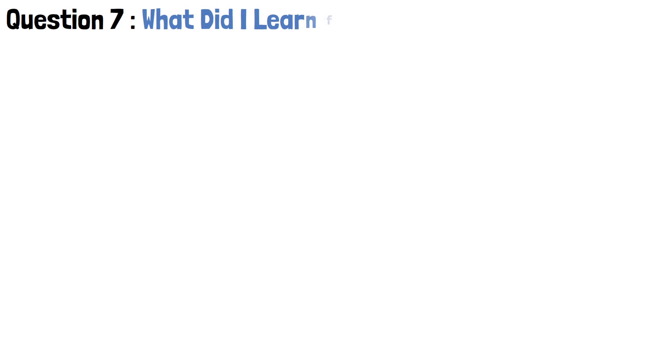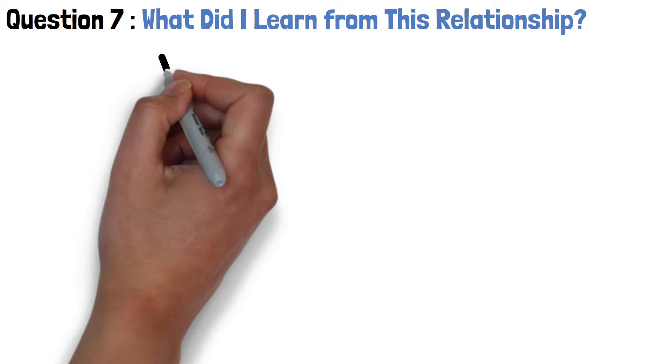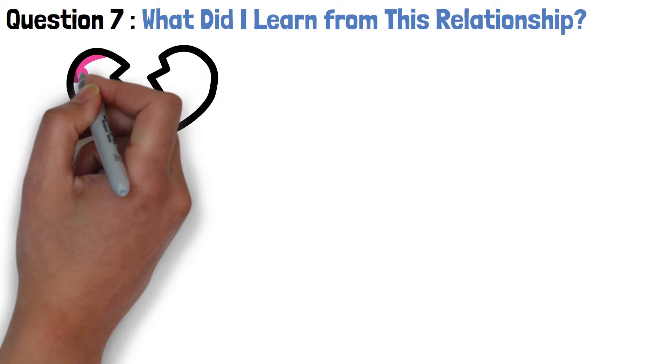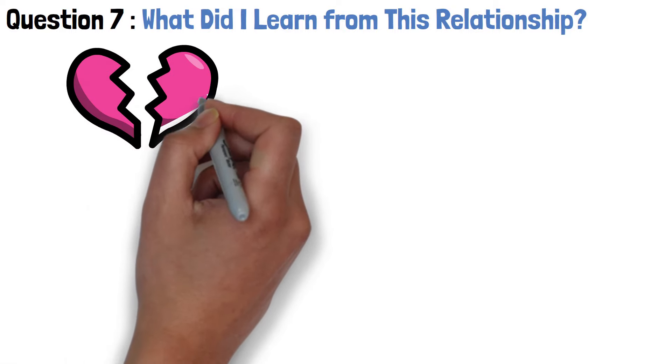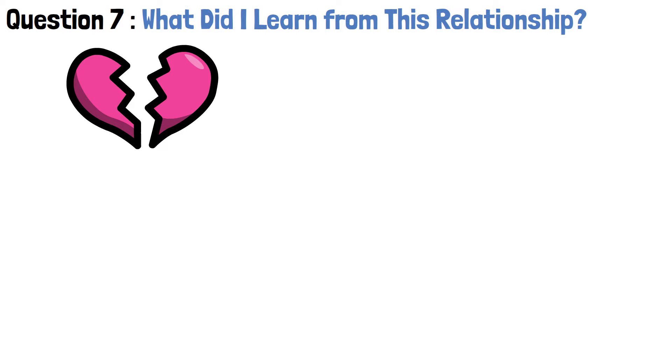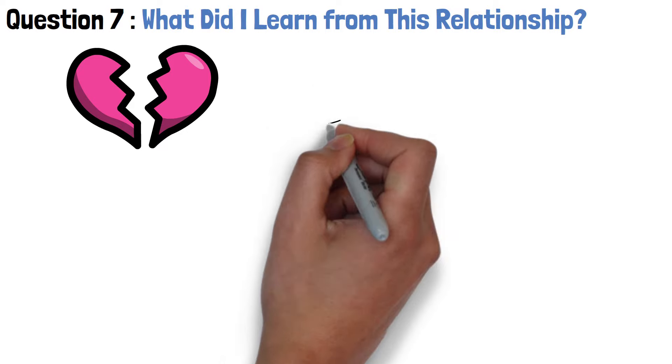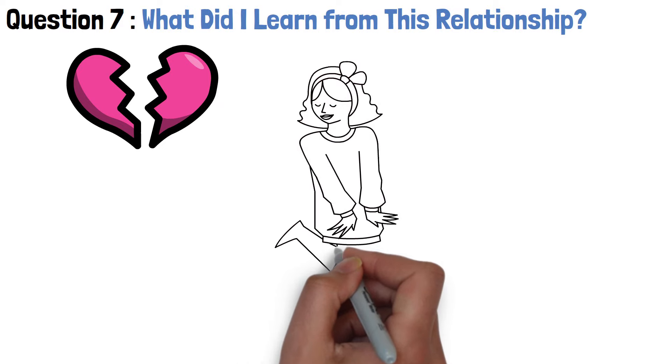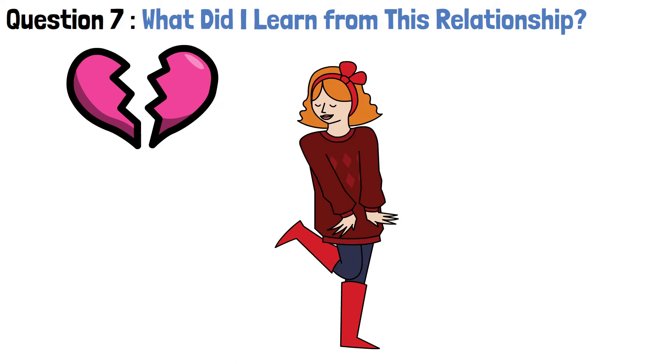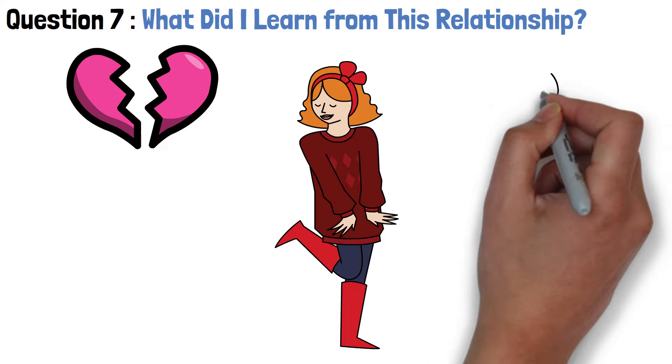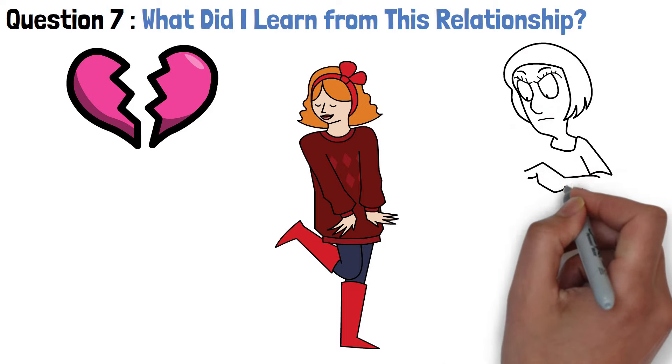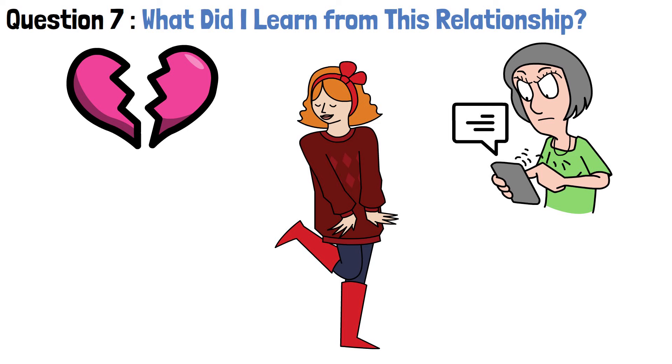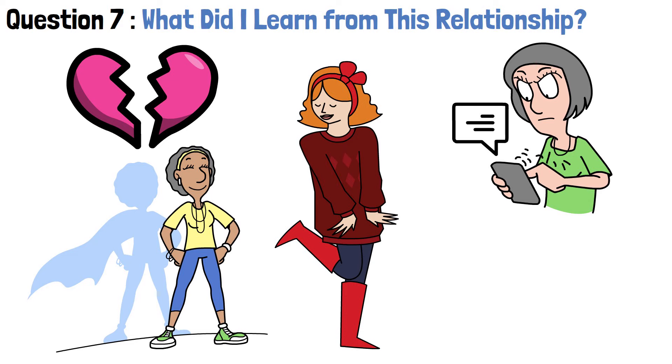Question 7. What did I learn from this relationship? Every relationship, whether it ends in heartbreak or not, offers valuable lessons and insights that shape our personal growth and understanding of ourselves and others. Taking the time to reflect on the dynamics of the relationship can provide invaluable insights into our own behaviors, needs, and desires as well as those of our partner. Perhaps, you learned the importance of effective communication, the value of compromise, or significance of setting boundaries. Maybe you discovered your strengths and weaknesses in relationships or gained clarity on your values and priorities.